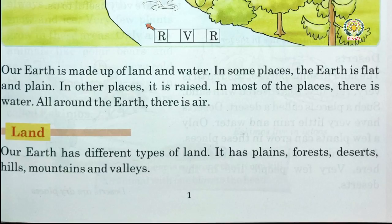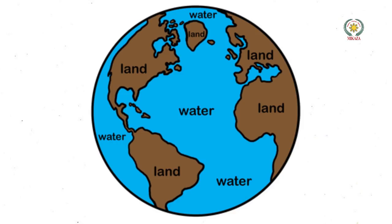In this chapter we'll read about the physical features of the earth. Earth has different types of land — it has plains, forests, deserts, hills, mountains, and valleys. All the dry area of the earth is called land.